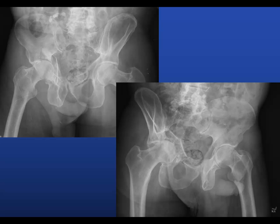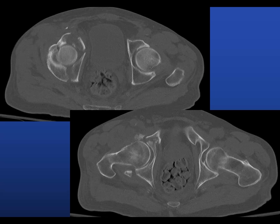Clearly any fixation strategy here is going to require buttressing all that back to get the head back over. You have to get in there, bring it back over, and then deal with the dome comminution. You can see a very comminuted acetabulum fracture with a small posterior wall fracture, but this is not the unstable hip-dislocating-out-the-back type of posterior wall fracture.